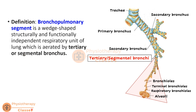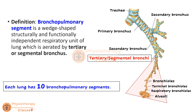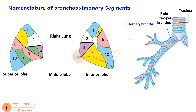Each lung has 10 bronchopulmonary segments. Let us now look at the nomenclature of bronchopulmonary segments, first in the right lung and then in the left lung. In this diagram we can see the anterolateral surface and the posteromedial surface of the right lung, with the hilum, and the bronchial tree showing the trachea, primary bronchus, secondary bronchi, and segmental bronchi.